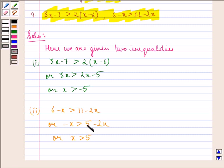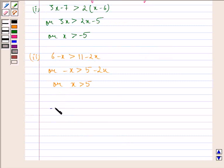So we see here that solution of first and second inequality implies that x is strictly greater than 5. Hence, the values of x satisfying both the inequalities are given by 5 is strictly less than x, which is strictly less than infinity.